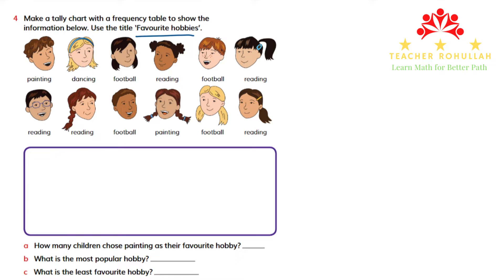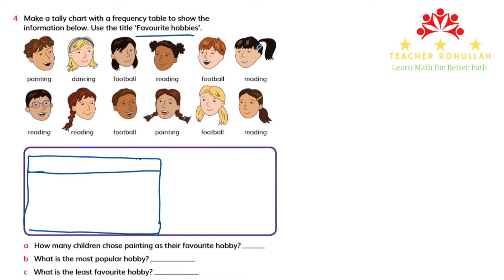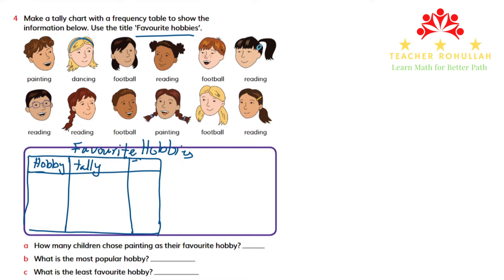Let me draw the tally chart here, since the question asks us to make both a tally chart and a frequency table. I'll make it a bit wider. The title for both is 'Favorite Hobbies.' I'll write the columns: Hobby, Tally, and Frequency.